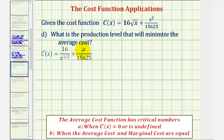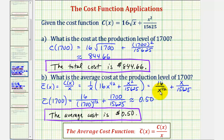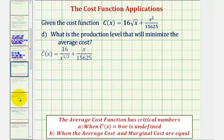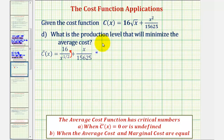For part D, what is the production level that will minimize the average cost? Here's the average cost function from part B. To minimize this function, the first step is to find the critical numbers. We can find where the derivative is equal to zero or undefined, or when the average cost and marginal cost are equal. We'll rewrite 16 divided by x to the 1/2 as 16x to the power of negative 1/2 so we can apply the power rule.